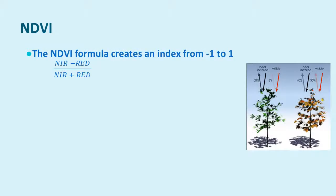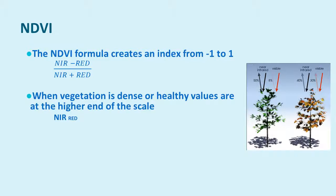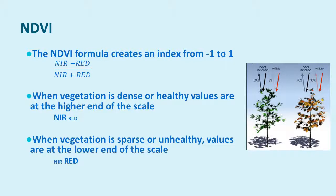Using those properties of plants, we can calculate the NDVI. The NDVI formula is fairly straightforward: take the near-infrared and subtract the red, then divide that by the near-infrared plus the red. That creates an index from negative one to positive one. When vegetation is dense or healthy, values are at the higher end of the scale — you see a lot of near-infrared being reflected and a lot of red being absorbed, so big near-infrared and little red results in high values. When it's sparse or unhealthy, very little near-infrared is reflected and a lot of red is reflected, meaning little near-infrared and big red values results in numbers toward the negative end of the scale.